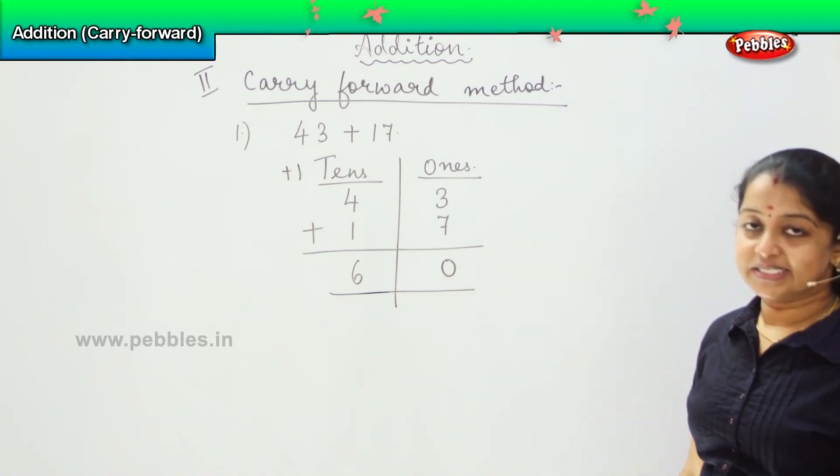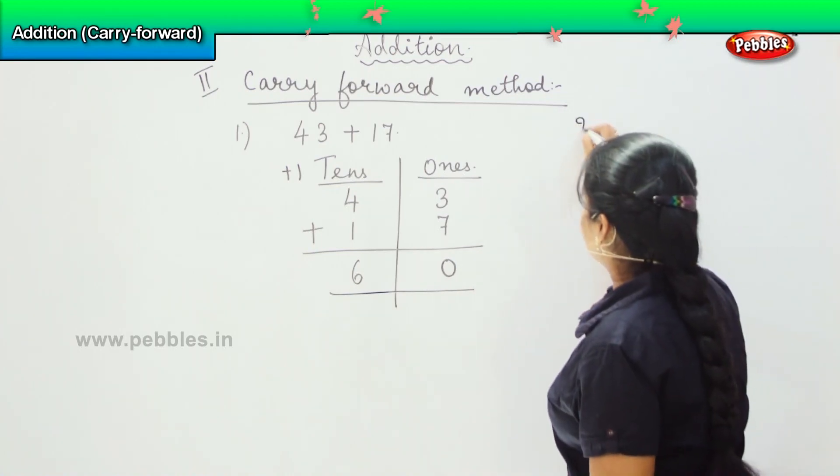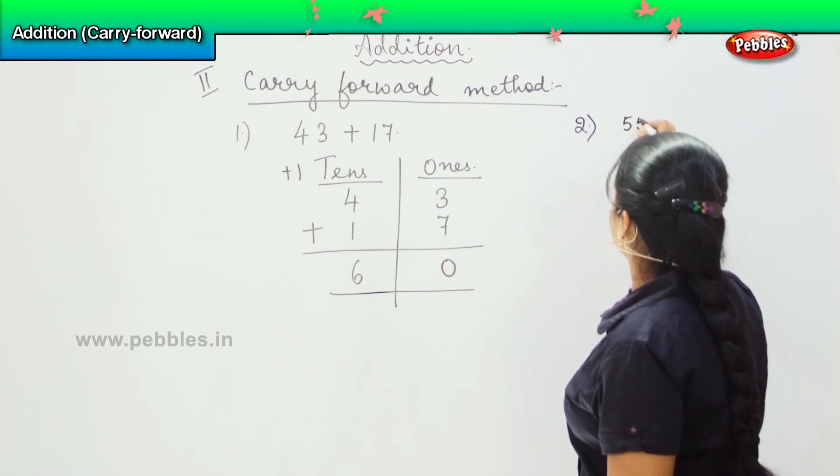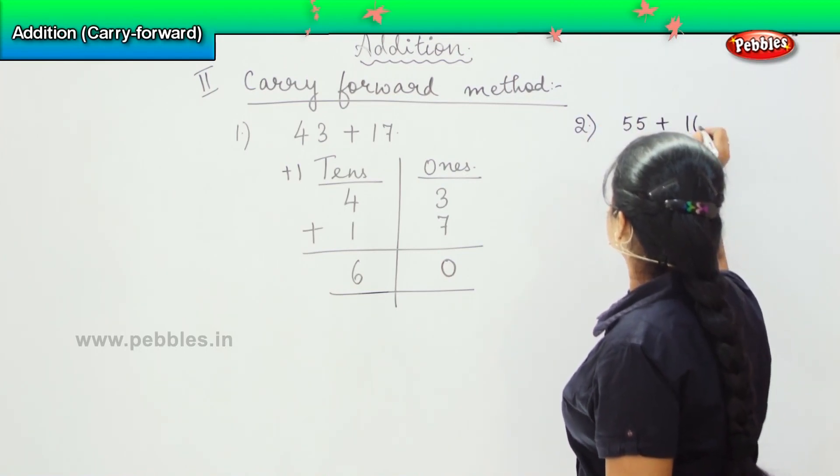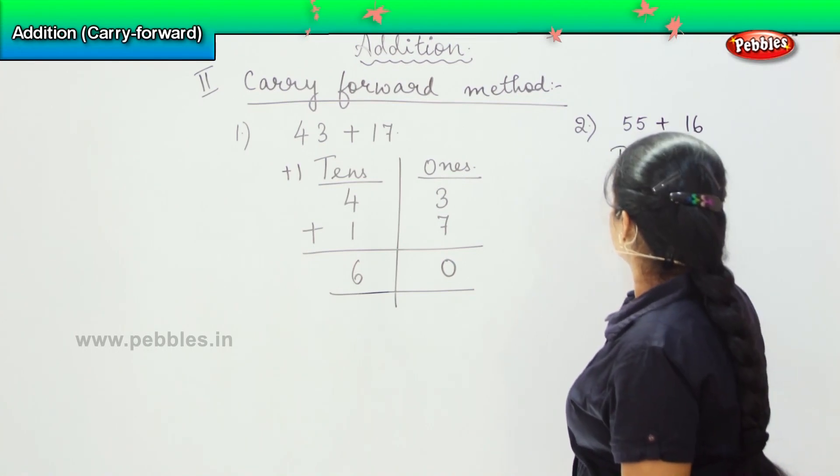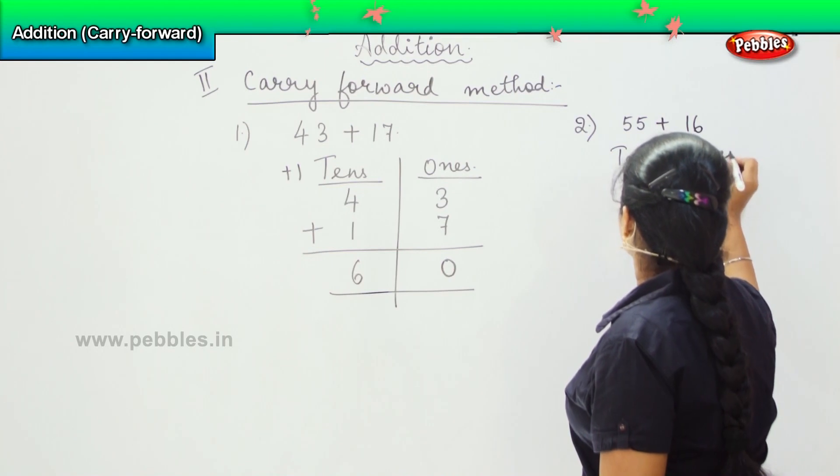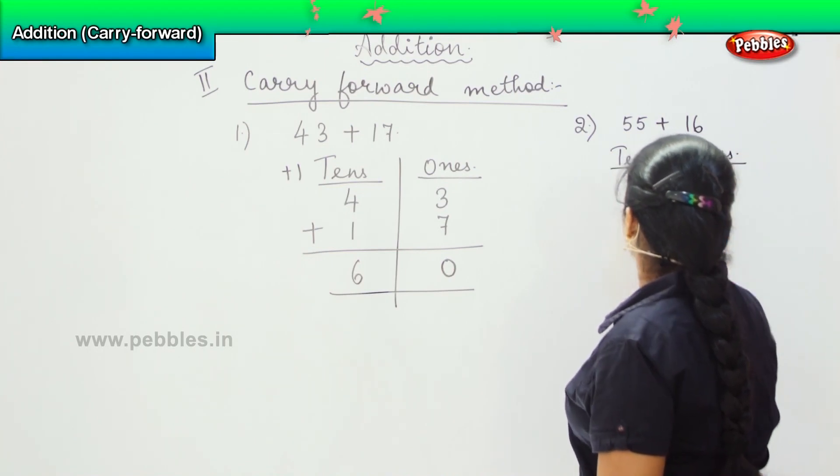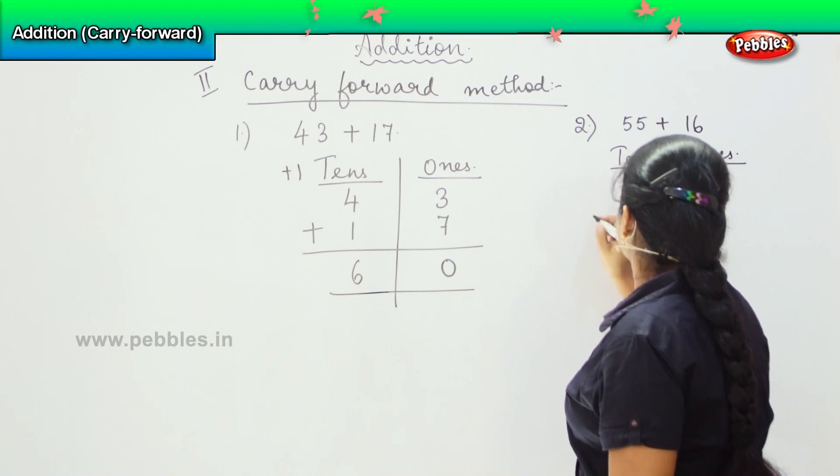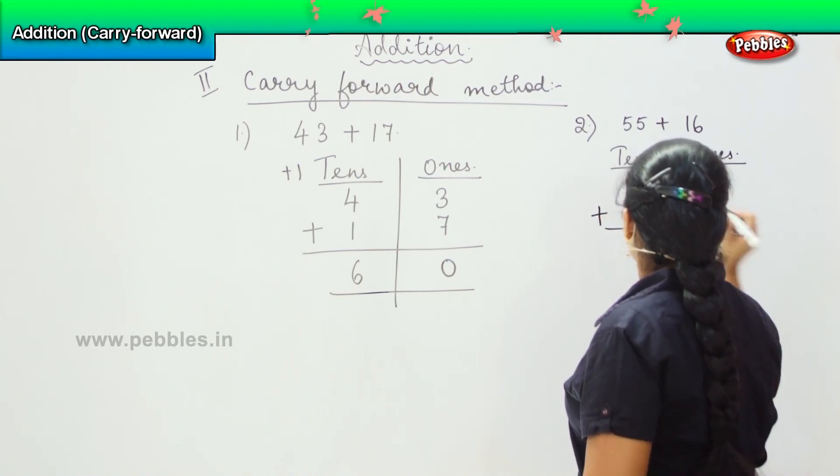Shall we do the next sum which we did? The next sum was 55 plus 16, right? So similarly, tens and ones: 55 can be written as 5 tens and 5 ones, and 16 can be written as 1 ten and 6 ones.